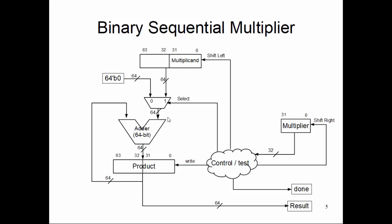What is happening is we need to selectively add the multiplicand, which is 64 bits, with the product, which is also 64 bits, depending on if the multiplier bit is 1 or 0. So we need to deploy a 64-bit adder.